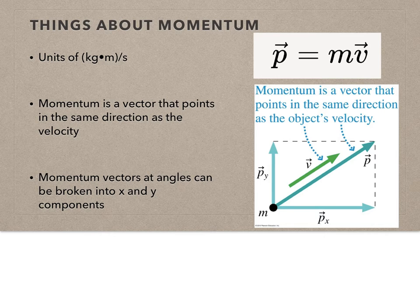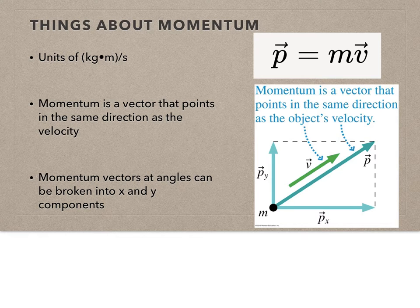If I'm going 10 meters per second north, that's the direction of my velocity and also the direction of my momentum — I can't have a different direction. Unlike acceleration and velocity, which can be in different directions. Since we're back to vectors at angles, we'll have to break them into x and y components if needed, though we're going to minimize that a little bit in this section.